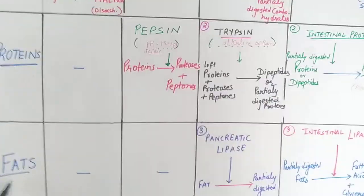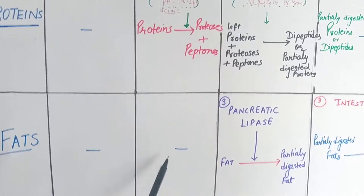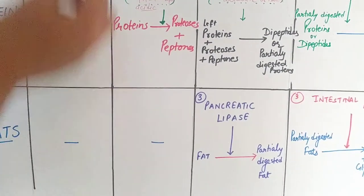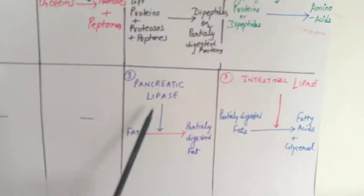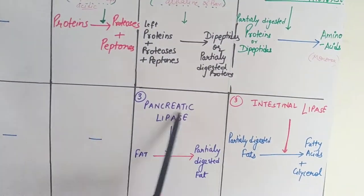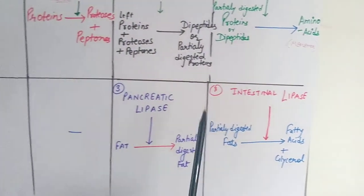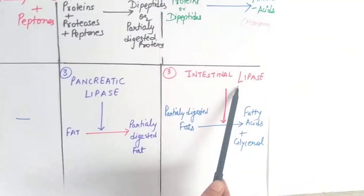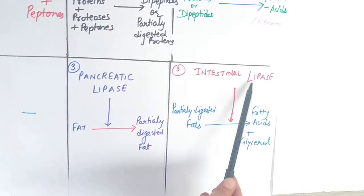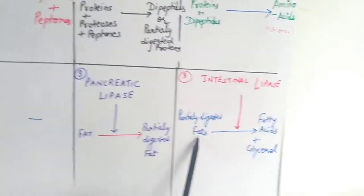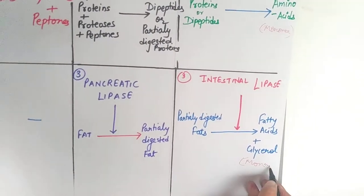For fat digestion: saliva has no enzyme, so no digestion of fat takes place in the mouth. In the stomach, there is also no enzyme in gastric juices to digest fat. When food moves into the duodenum, pancreatic lipase is secreted, causing partial digestion of fat. Then intestinal lipase enzyme digests these partially digested fats into their monomers — fatty acids and glycerol — which are the building blocks of fat.